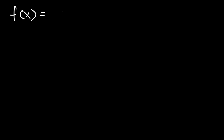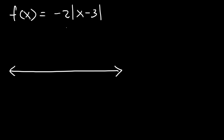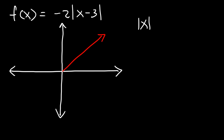Here's another problem — this time we're going to have an absolute value function. Determine where the function is increasing and decreasing and write the intervals. For this one, there's no need to find the first derivative because it's very easy to graph. If we were to graph the absolute value of x, it opens upward with a slope of 1 and the vertex at the origin.